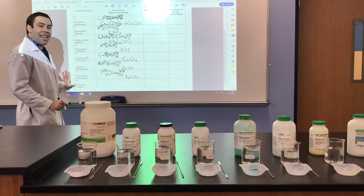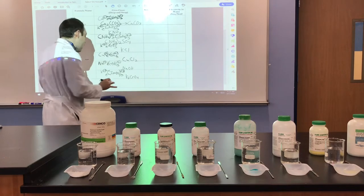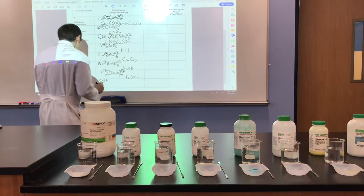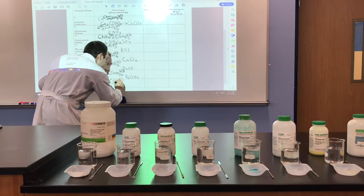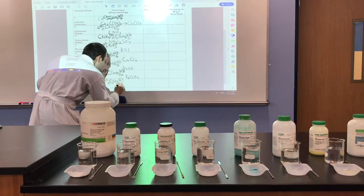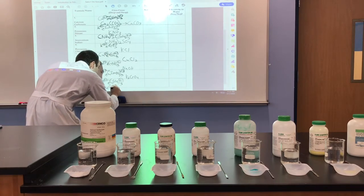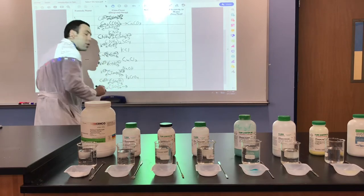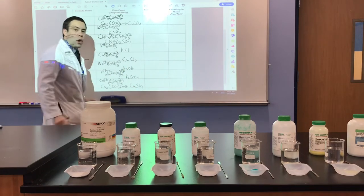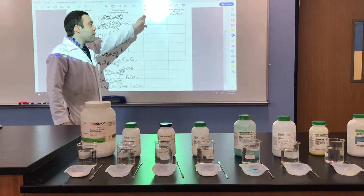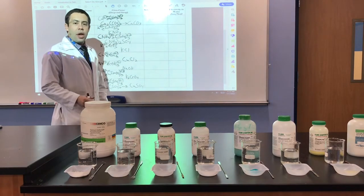And for the last one, calcium sulfate — the charge of calcium, element number 20, is positive 2. Sulfate is SO4, 2 minus. When you perform the criss-cross drop-swap method, you get Ca2(SO4)2, which reduces to CaSO4. Now use Table F to determine whether these 8 compounds are soluble or insoluble.